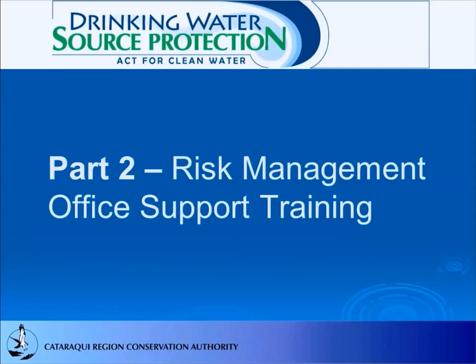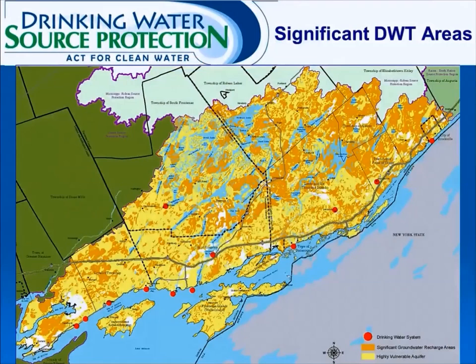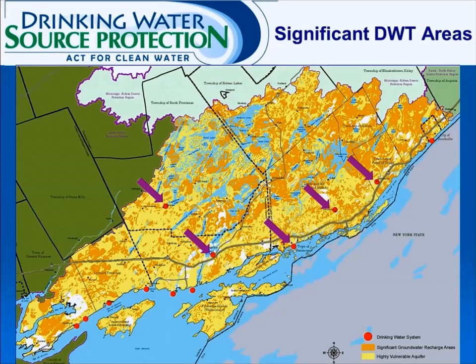Part 4 policies only apply to three wellhead protection areas and three intake protection zones with significant drinking water threats. This includes the Sydenham Intake Protection Zone, the Cana Wellhead Protection Area in Kingston Mills, the James W. King Intake Protection Zone in Gananoque, the Lansdowne Wellhead Protection Area, the Miller Manor Wellhead Protection Area in Mallorytown, and the Brockville Intake Protection Zone.